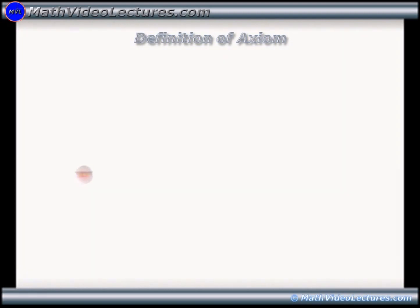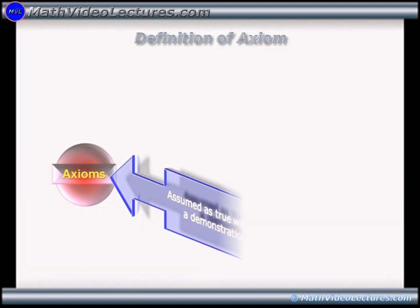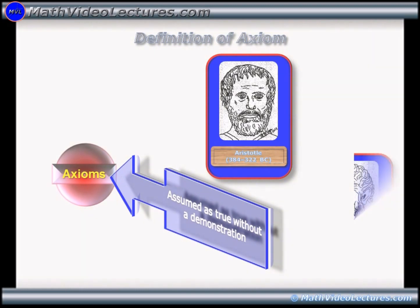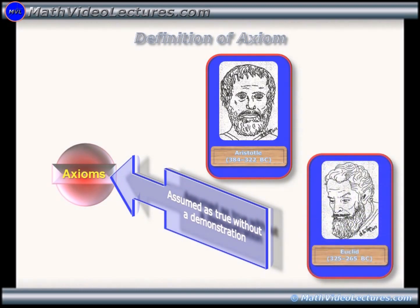So, axioms are assumed as true without a demonstration. This notion of axiom was initiated by Aristotle in the ancient Greece, and afterwards it was used widely by Euclid, among others.